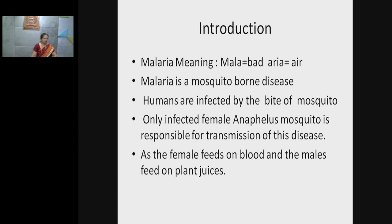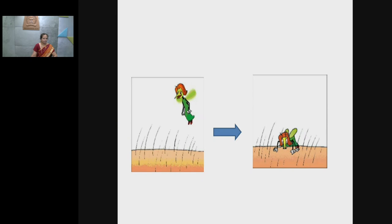Even though females are responsible, that female must be infected. An infected female Anopheles mosquito is responsible for transmitting this disease. This figure shows the female mosquito arriving on the skin of a vertebrate and sucking blood.